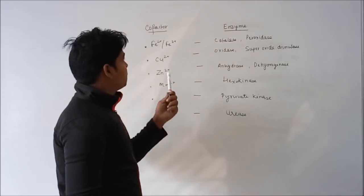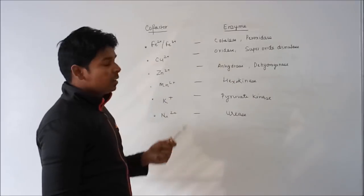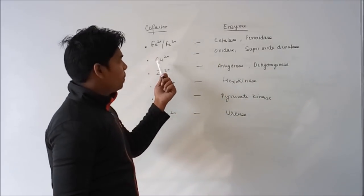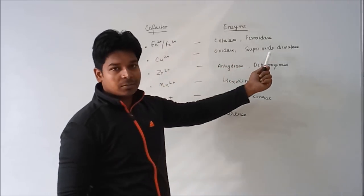These are some examples of cofactor and their enzymes. First one is iron. Iron is utilized by catalase or peroxidase. Second one is copper ion. Copper ion is basically utilized by cytochrome oxidase or superoxide dismutase.